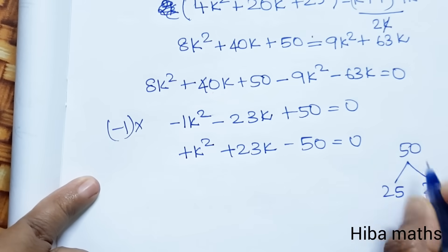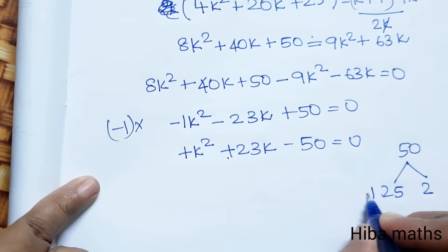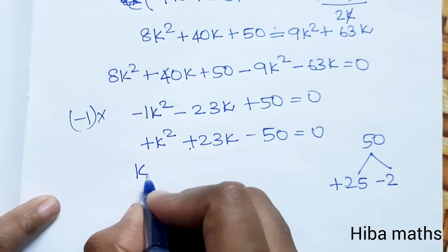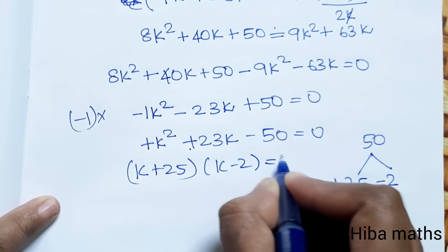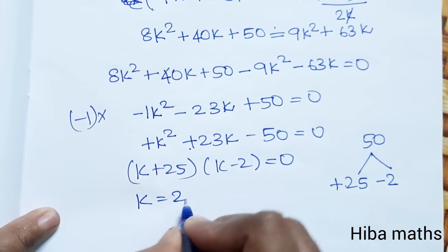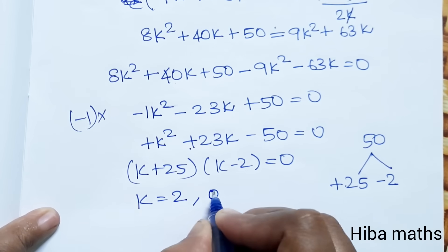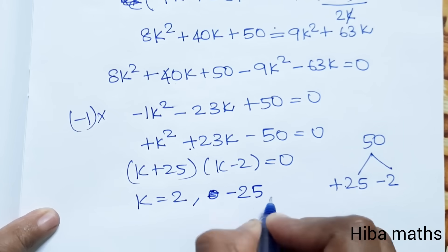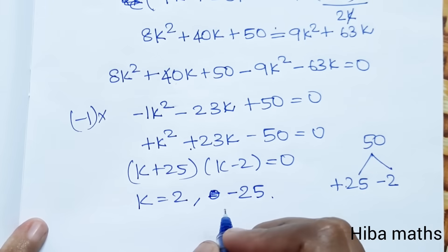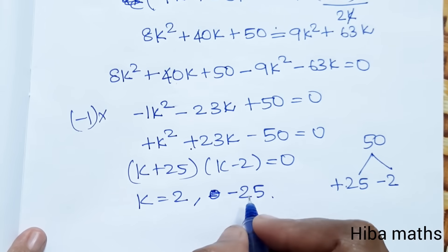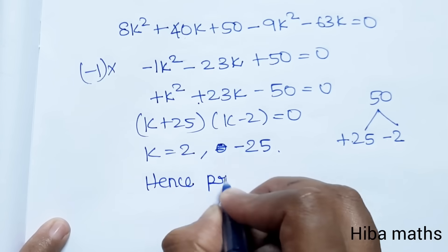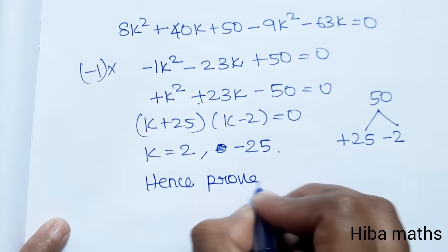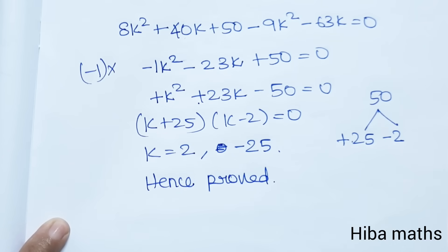Solving the quadratic, k equals 2 or k equals minus 25. Hence proved. Hope you understand — please try the question yourself. Thank you so much for watching.